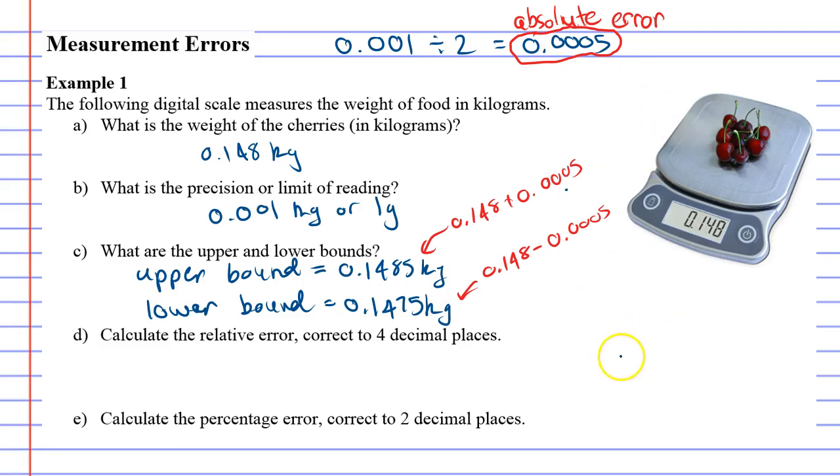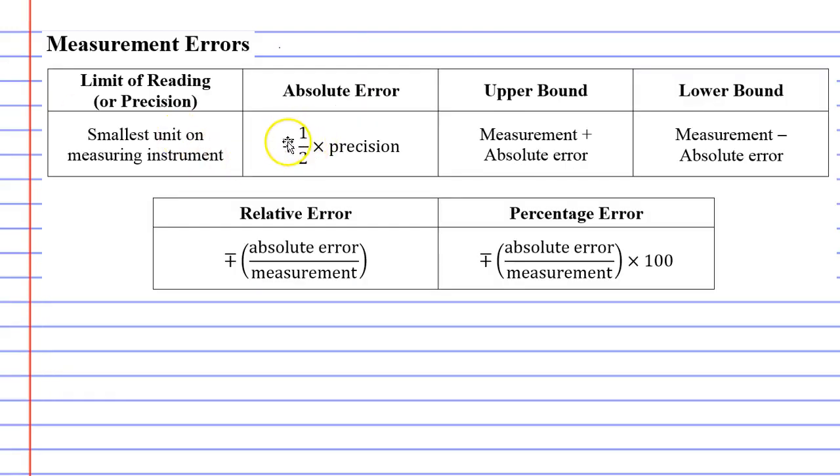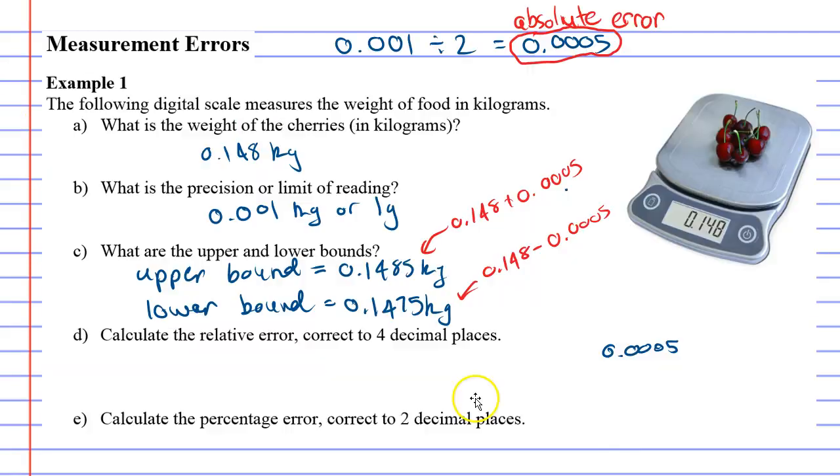So absolute error we found was 0.0005. And when we look back at the formulas, it actually has a plus or minus in front of this. It's plus or minus 0.0005. And the reason for that is because we could have gone 0.0005 above 0.148 kilograms, or we could have gone 0.0005 below 0.148 kilograms. And that's why they put the plus or minus there to say this error could have gone above or below this amount.